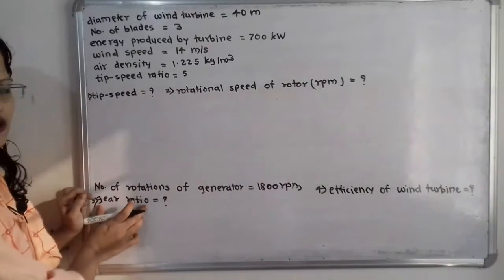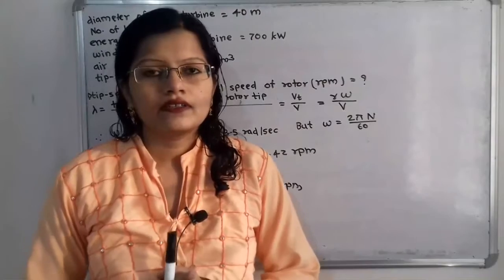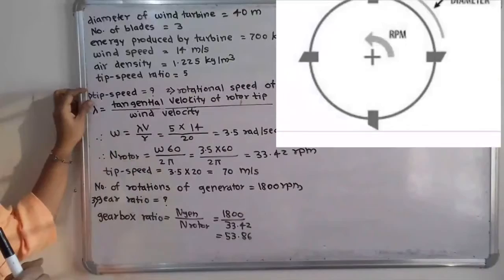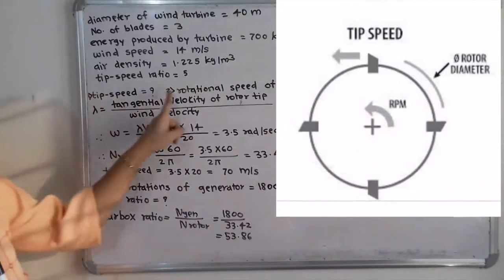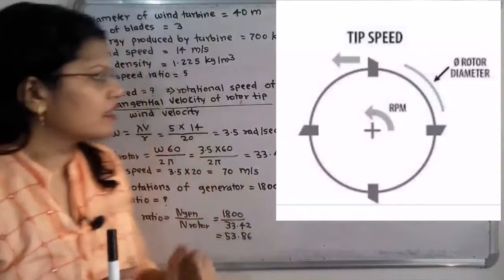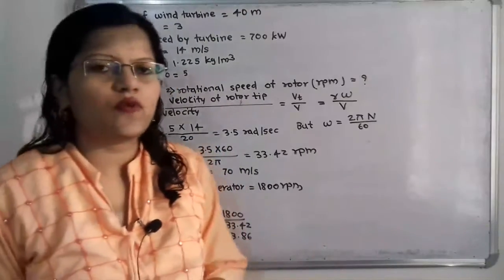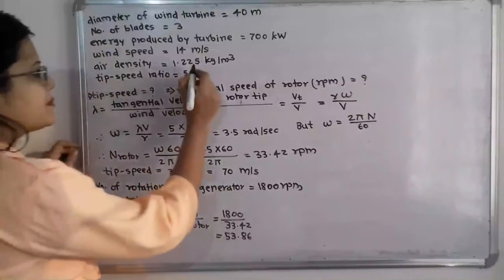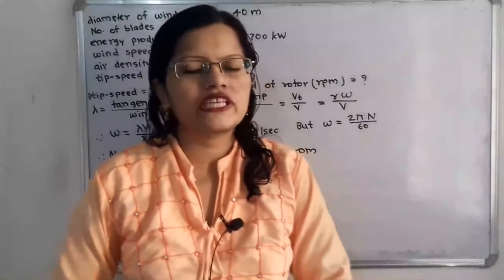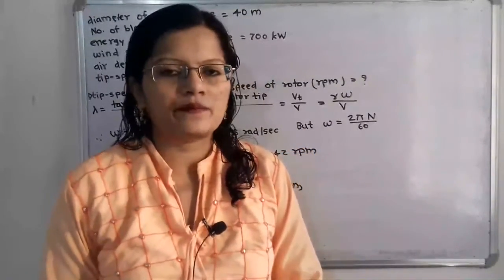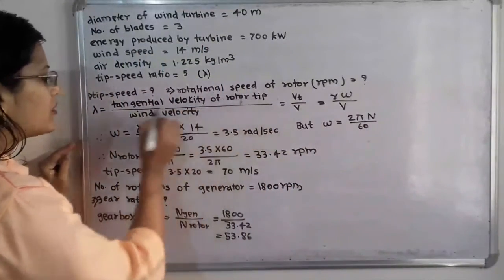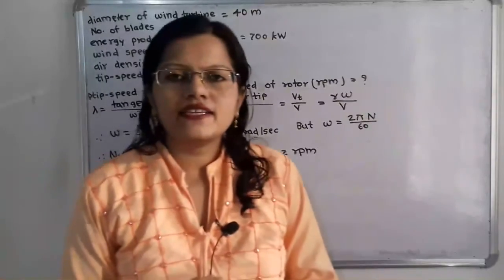Now we will move to the first question — we have to find out the tip speed in meter per second and the rotational speed of the rotor in revolution per minute. The tip speed ratio is denoted by lambda. So first we will find out the formula for tip speed ratio lambda: lambda is equal to the tangential velocity of the rotor tip divided by wind velocity.